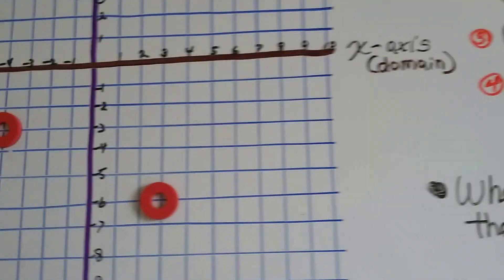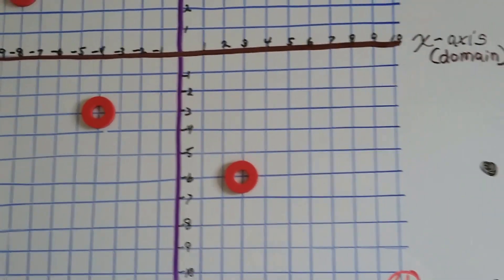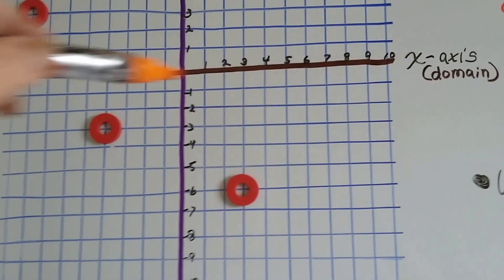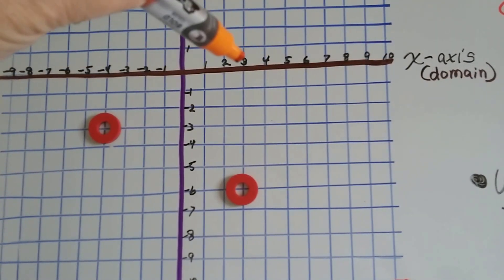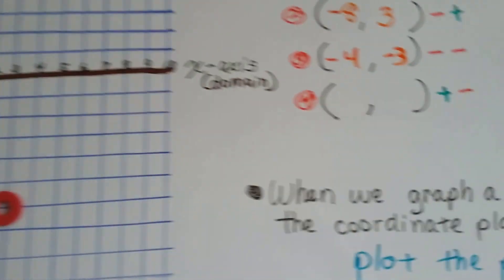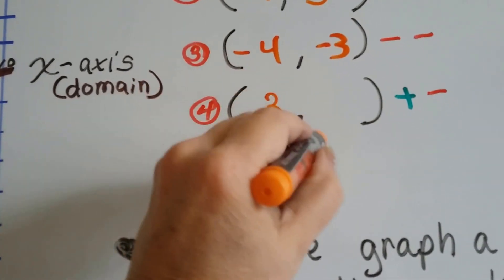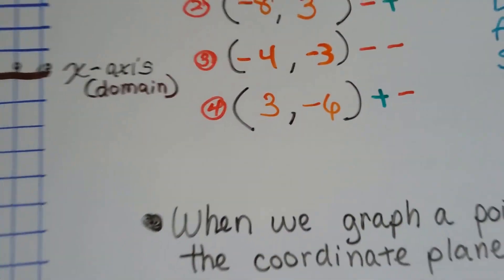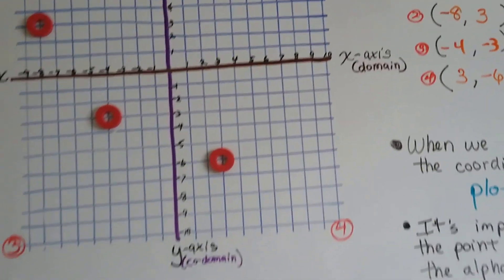And then on the last one, where is it located? We start with the x-coordinate first, the side-by-side one. So, we're at a 3, negative 6. 3 comma negative 6. Piece of cake.